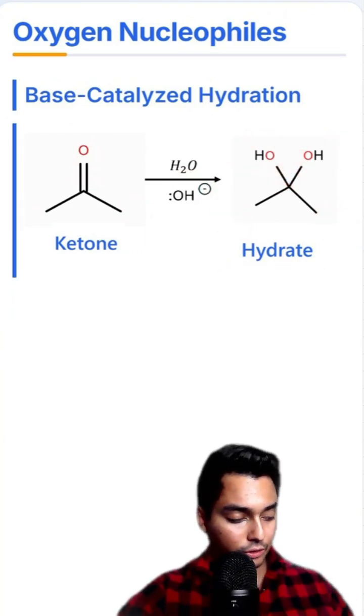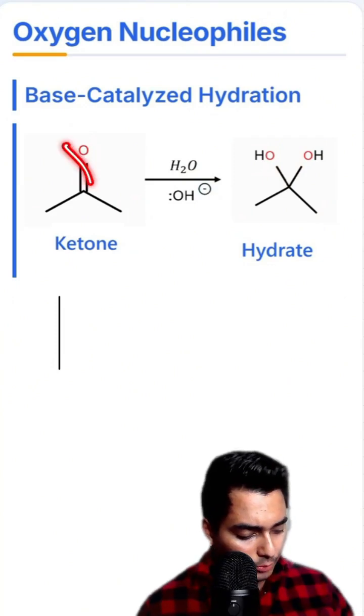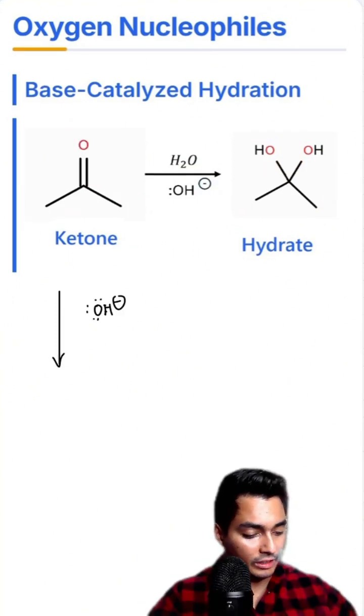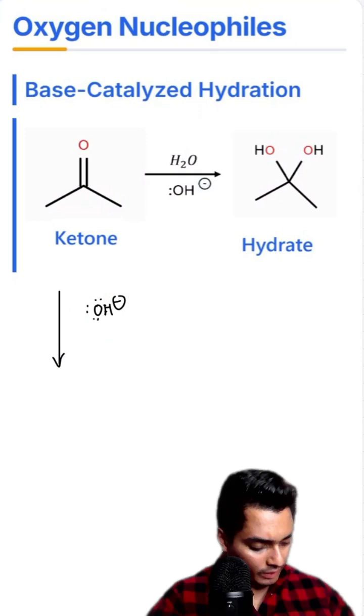Now let's draw the mechanism for this reaction. Notice that we want to get rid of this carbonyl. So since this is base-catalyzed hydration, I'm going to start by taking my base and attacking the bottom side of this carbonyl, thereby pushing this up.